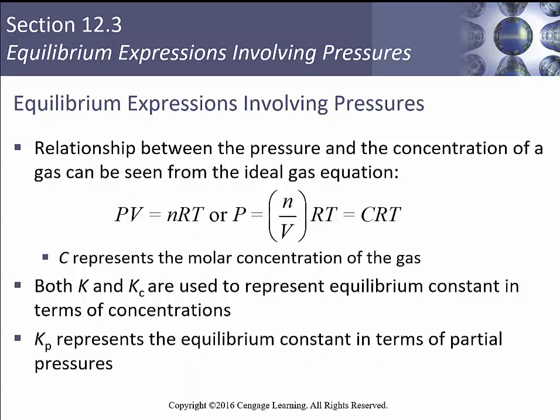If we're working with pressures, as we saw in the last chapter and in chapter 8, we can use pressure as a stand-in for moles or concentration when we're dealing with gases. The relationship between the pressure and concentration of a gas can be seen from the ideal gas equation. If we start off with PV equals nRT, we're going to rearrange it to solve for P, where P is going to be n over V times RT.